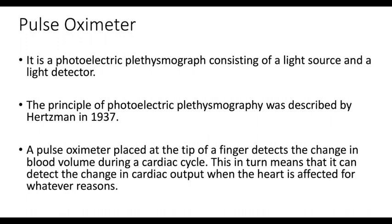A pulse oximeter is a photoelectric plethysmograph consisting of a light source and a light detector. The principle of photoelectric plethysmography was described by Hertzman in 1937. A pulse oximeter placed at the tip of a finger detects the change in blood volume during a cardiac cycle. This in turn means that it can detect the change in cardiac output when the heart is affected for whatever reasons.